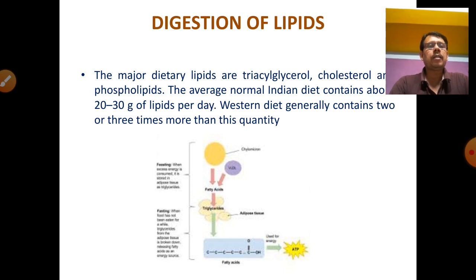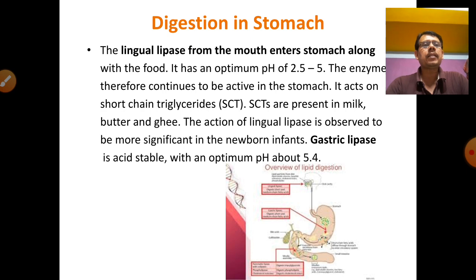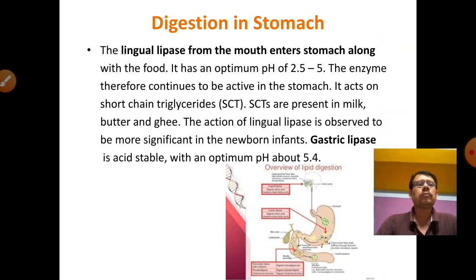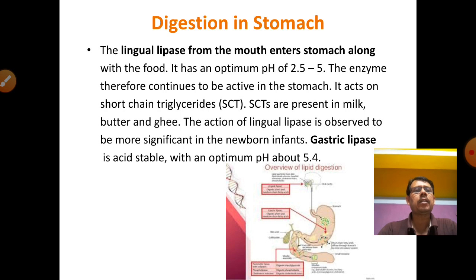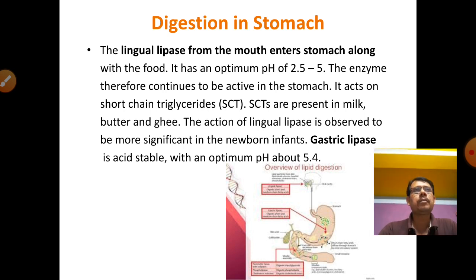Digestion begins in the stomach. Lingual lipase from the mouth enters the stomach with food and has an optimum pH of 2.5 to 5. The enzyme continues to be active in the stomach, acting on short-chain fatty acids found in milk, butter, and ghee. Lingual lipase is more significant in newborn infants. Gastric lipase present in the stomach has an optimum pH of 7.4 to 7.5 and digests the lipid content.